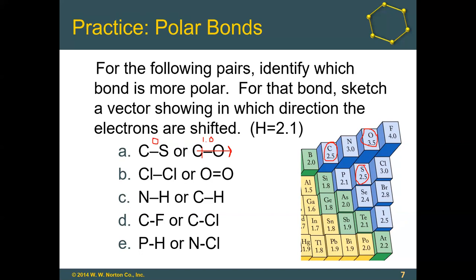Go ahead and pause the video to determine which bond in each remaining pair is more polar — you may decide both bonds are equally polar, in which case you would not sketch a vector. For pair B, the atoms are the same on each side of the bond in both molecules, so delta is zero for both — there is no polar bond in either Cl₂ or O₂. For pair C (N-H vs. C-H): the difference between nitrogen and hydrogen is 0.9, while the difference between carbon and hydrogen is 0.4. Remember, a difference of 0.4 is considered nonpolar.